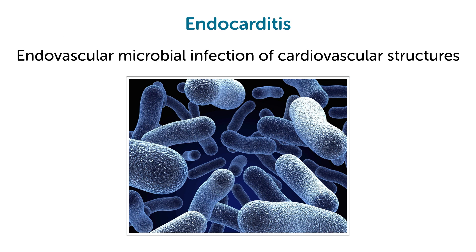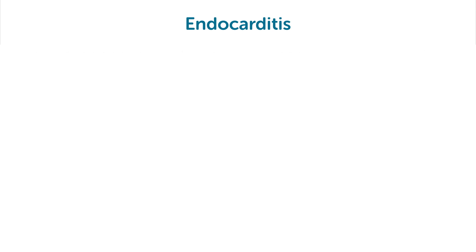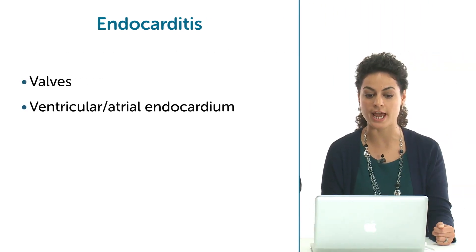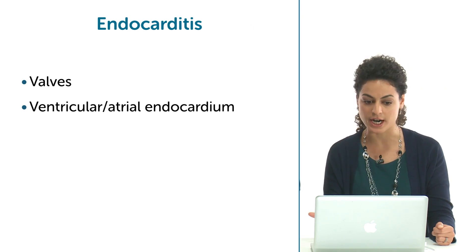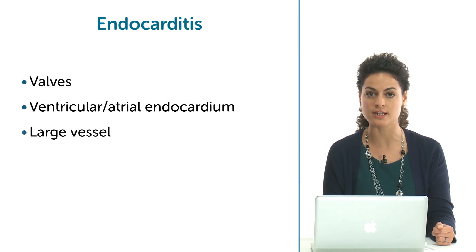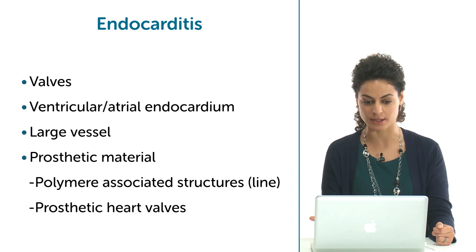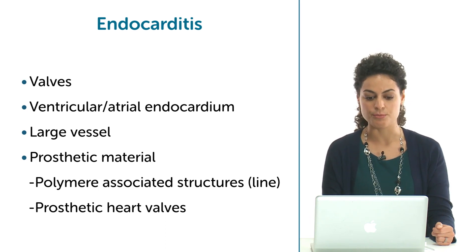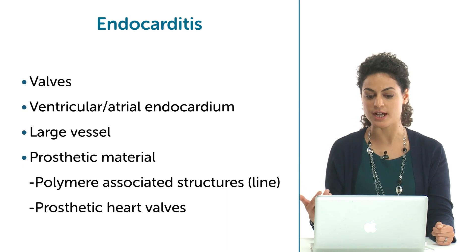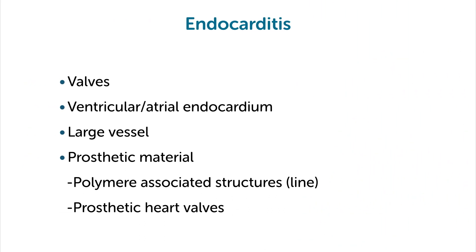What is it? It's an endovascular microbial infection of cardiovascular structures. This means it can involve the valves but also ventricular and atrial endocardium, as well as large vessels and especially prosthetic material — meaning prosthetic heart valves and the polymer-associated structures, so the line.